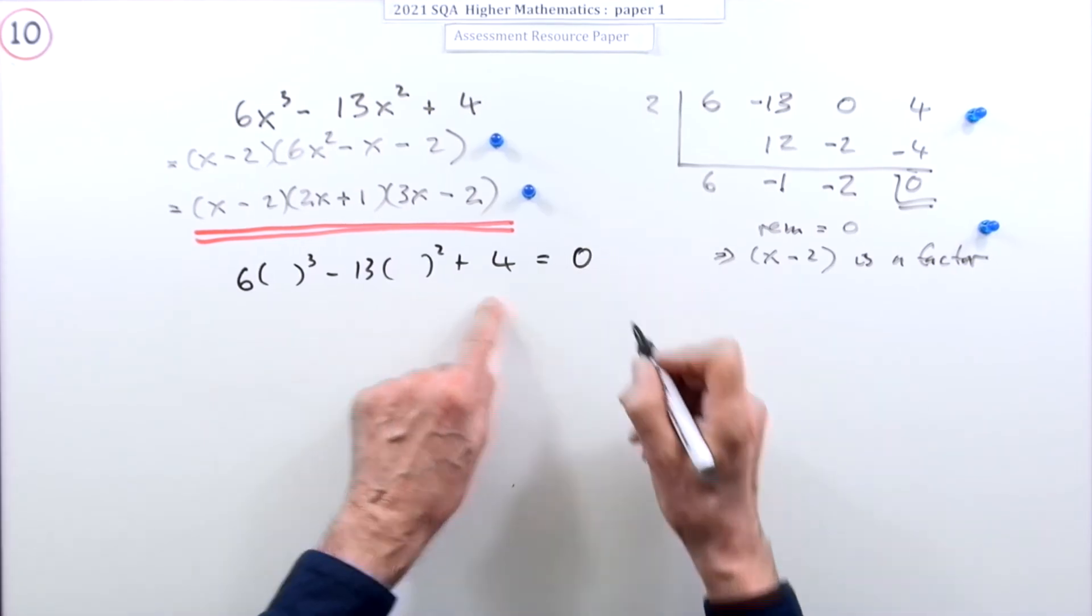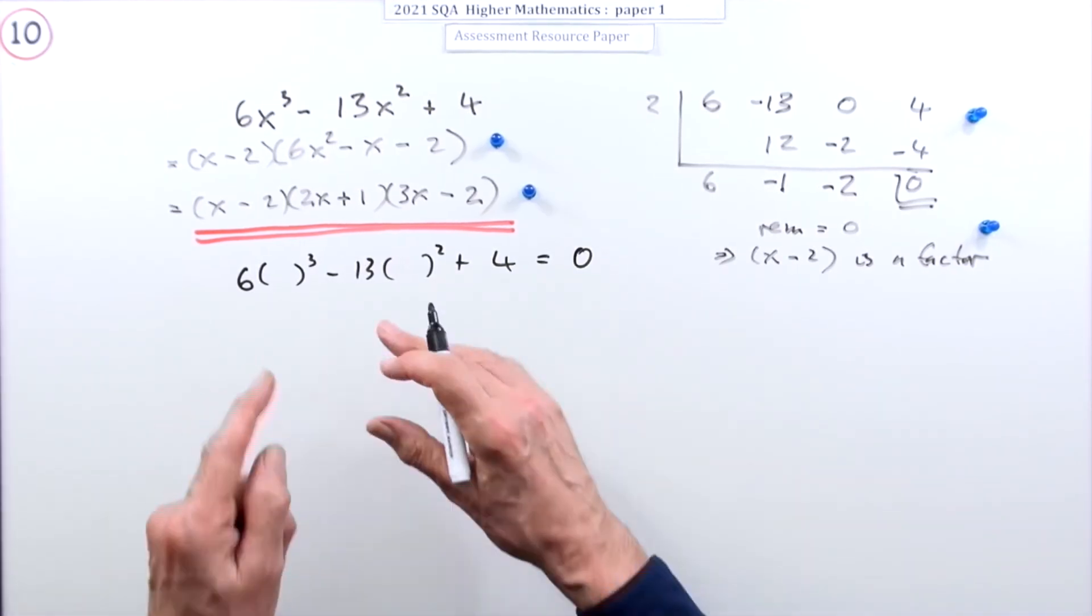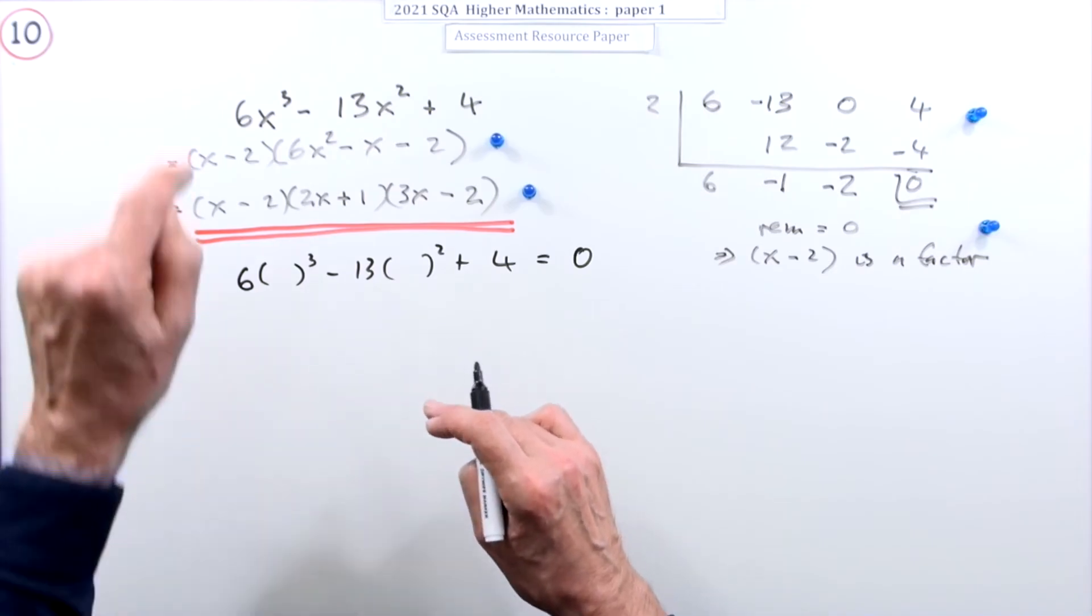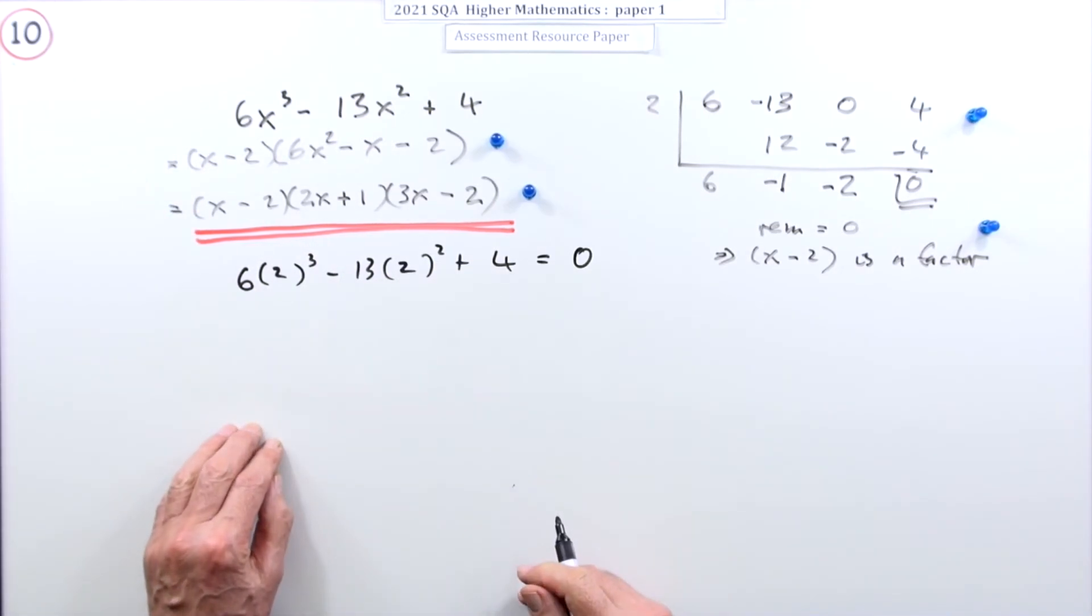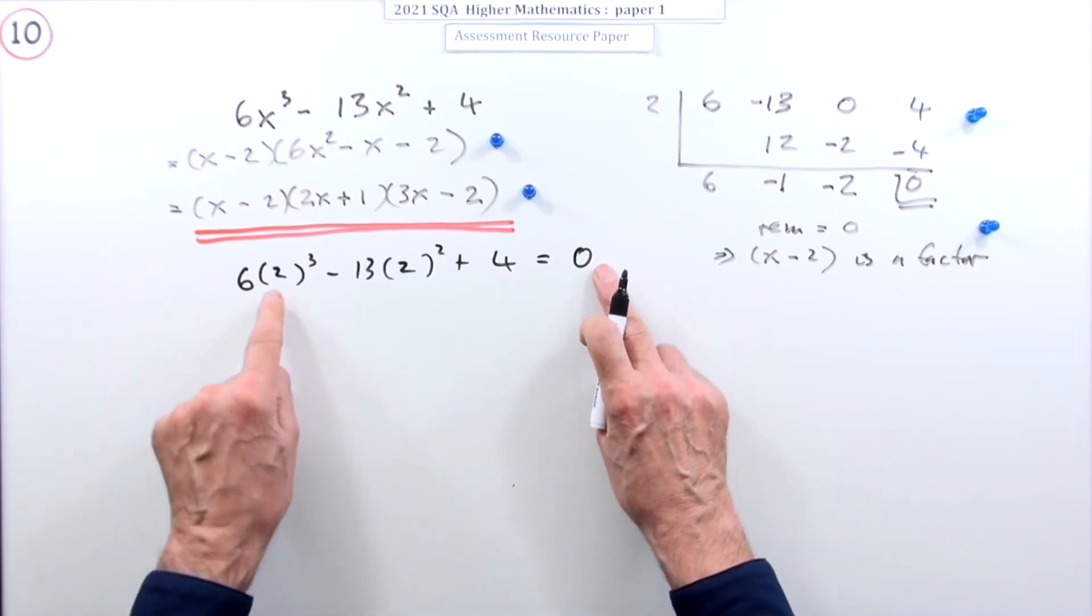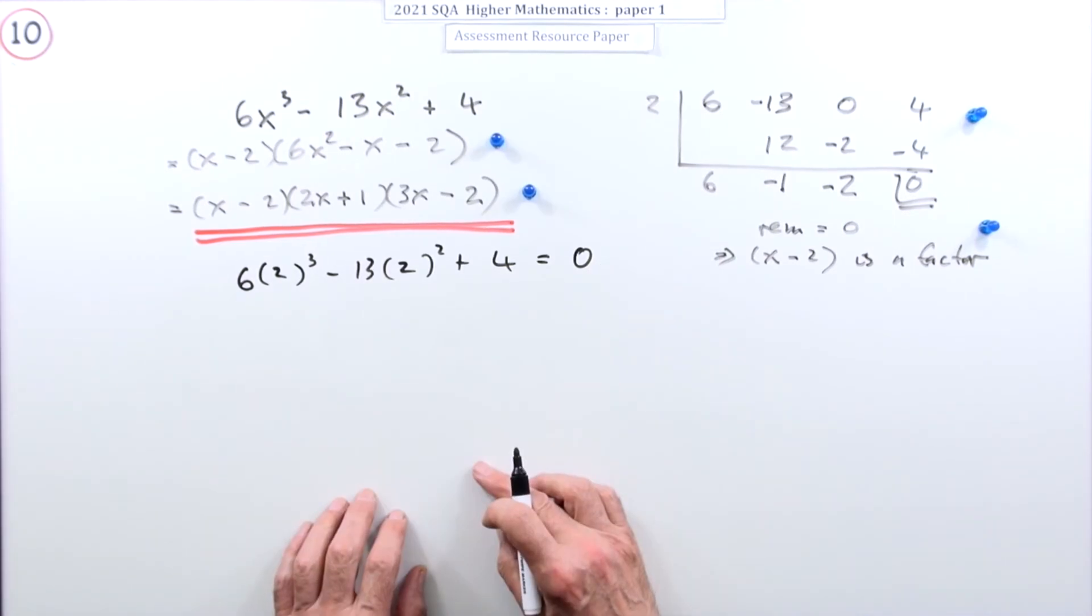You'd have to take this form and try and find a number that works that gives zero as an answer. In other words, try and find a root, because if you found a root you found a factor of the expression. And it wouldn't take you long to come up with two.